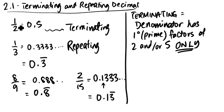As we can see here, the denominator 2 gives a terminating decimal. If it's a denominator that has prime factors of 3, we'll get repeating.